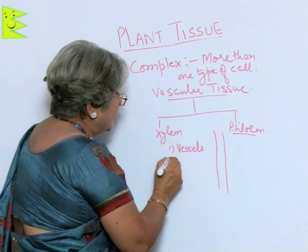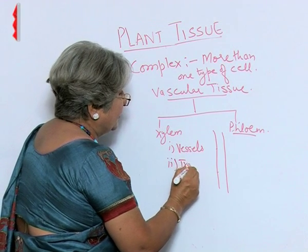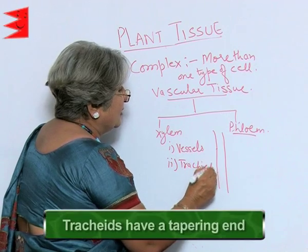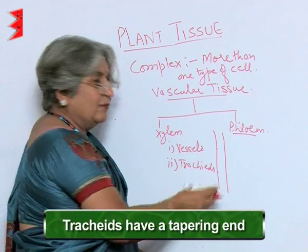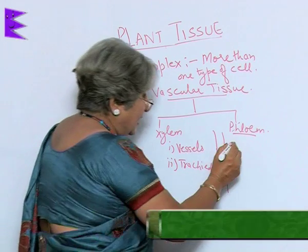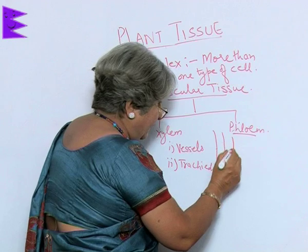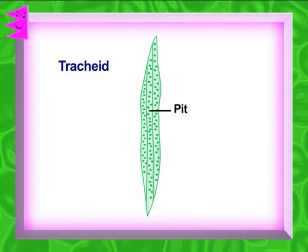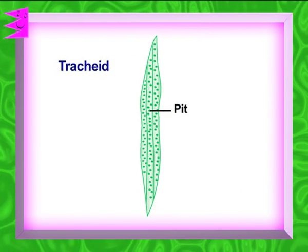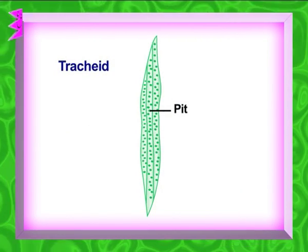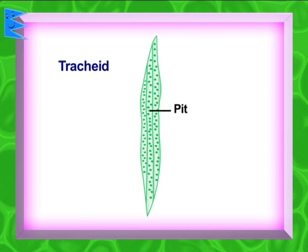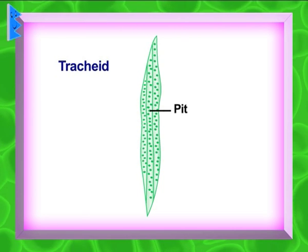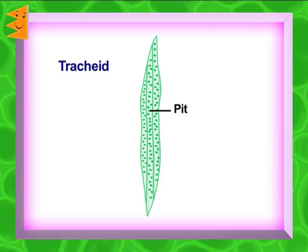Second is tracheids. Tracheids are somewhat like vessels but they have a tapering end and they have thickenings which can be of many patterns — reticulate, elongated, and so on.